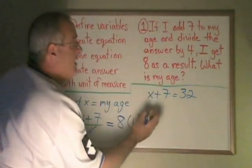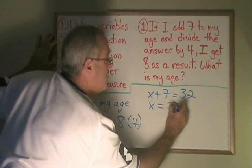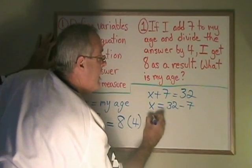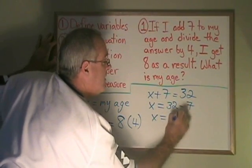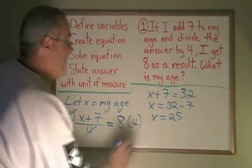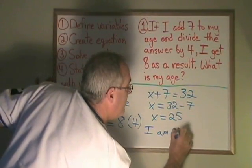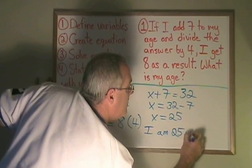Now I just have to move the 7 to the other side of the equals, x equals 32 minus 7, and I know my answer, x is 25. Then I state the answer with the unit of measure. Step 4. I am 25 years old.